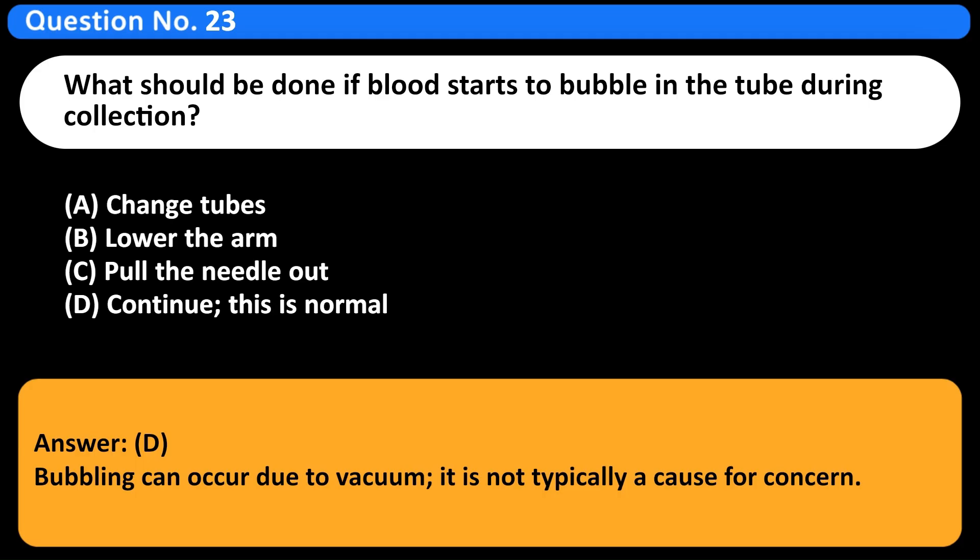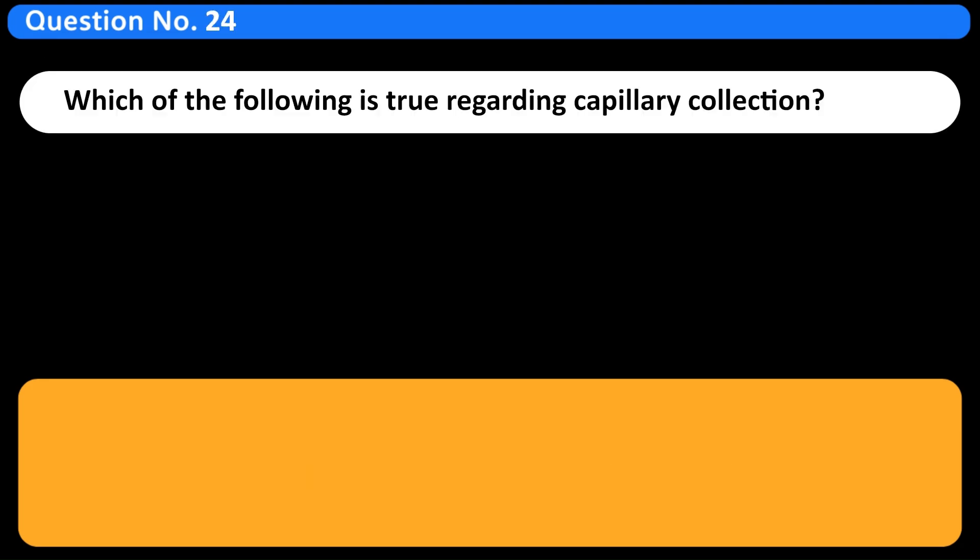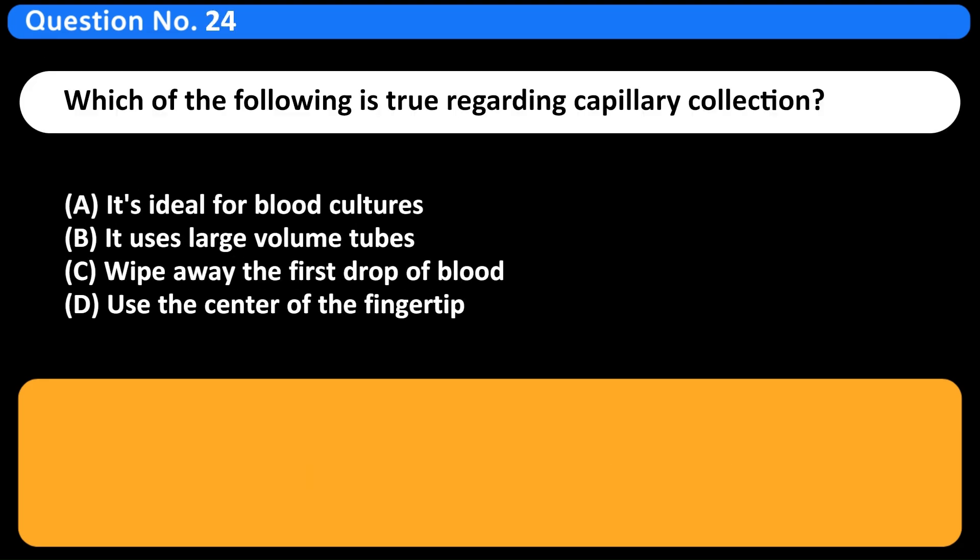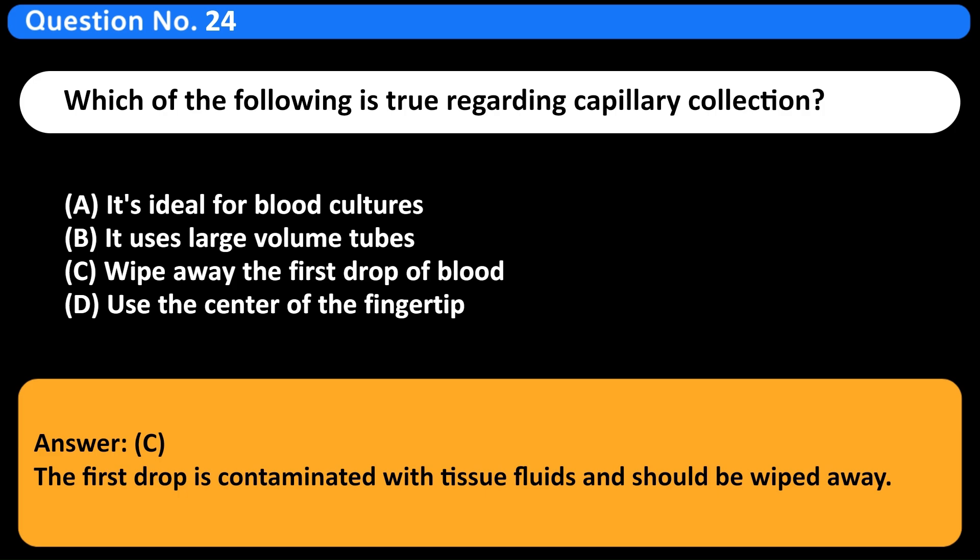Which of the following is true regarding capillary collection? A. It's ideal for blood cultures. B. It uses large volume tubes. C. Wipe away the first drop of blood. D. Use the center of the fingertip. Answer C. The first drop is contaminated with tissue fluids and should be wiped away.